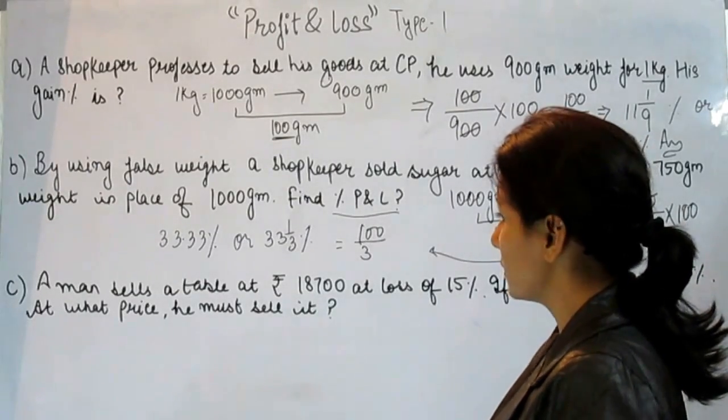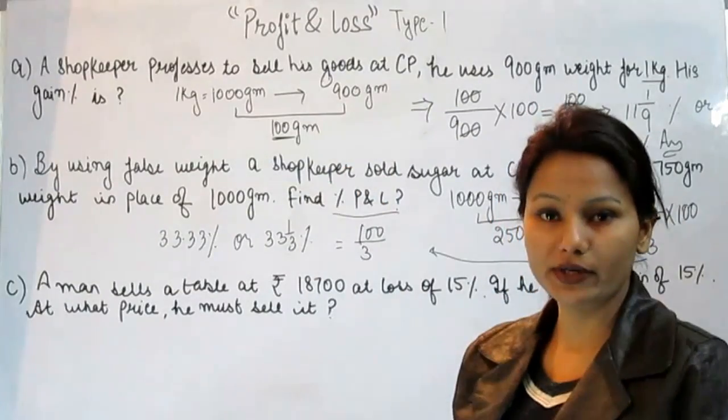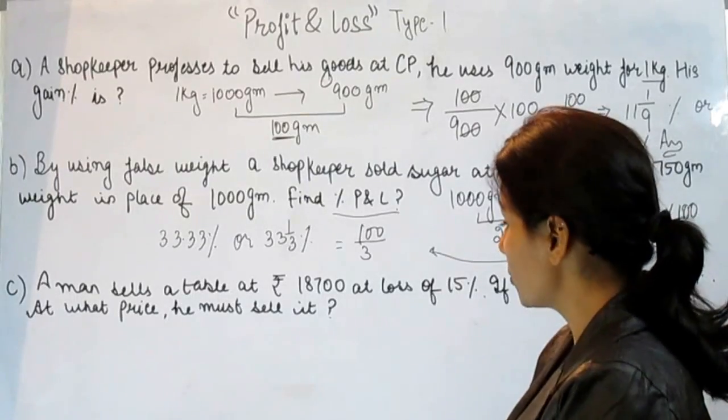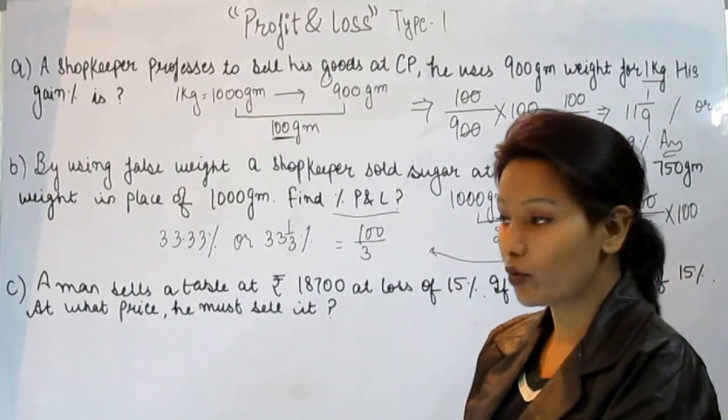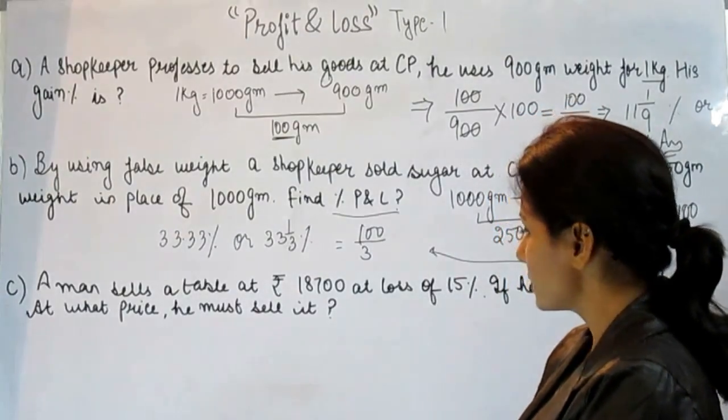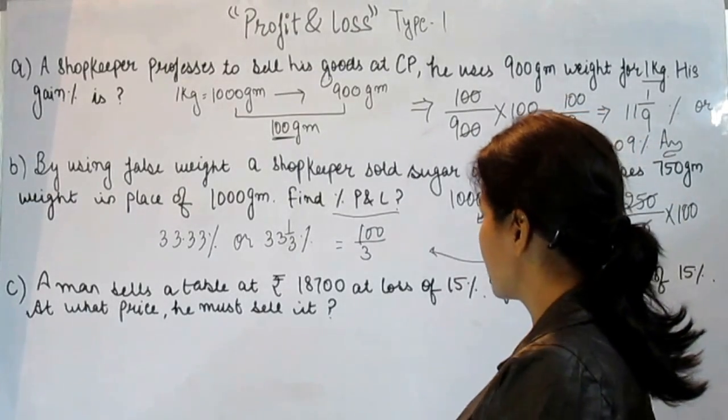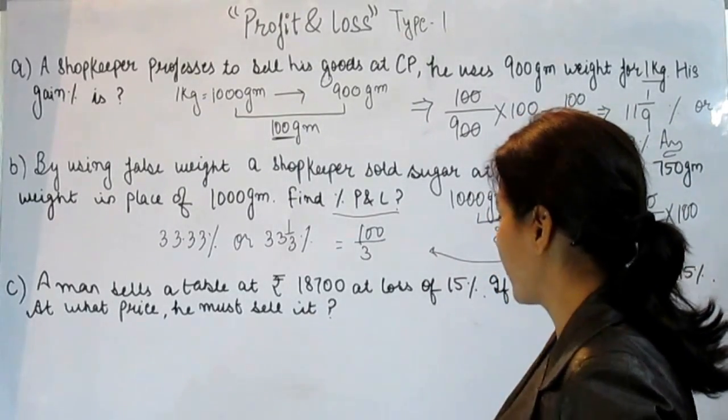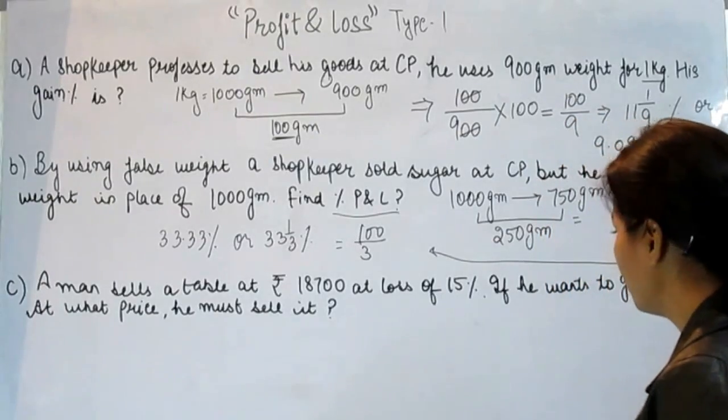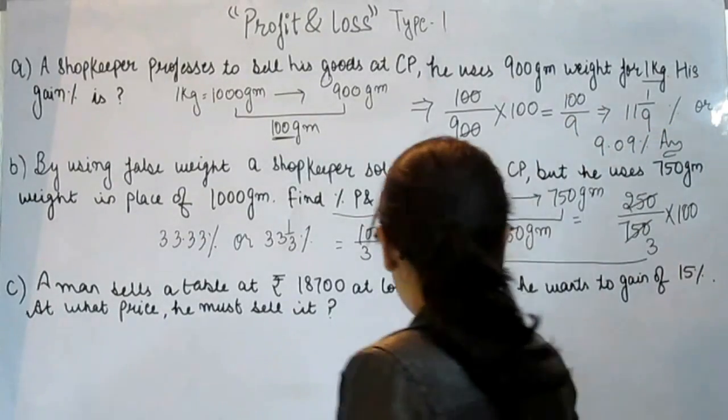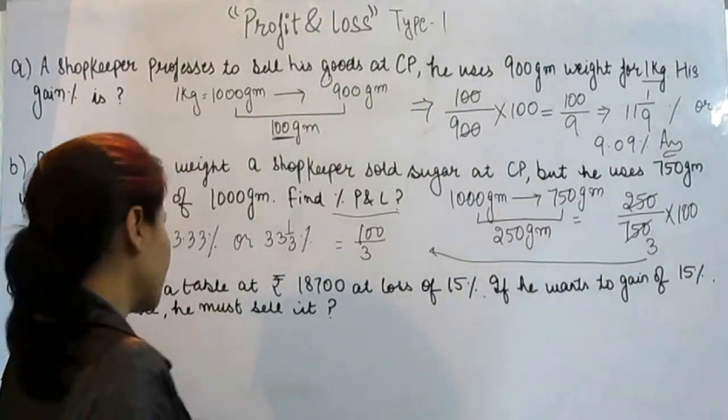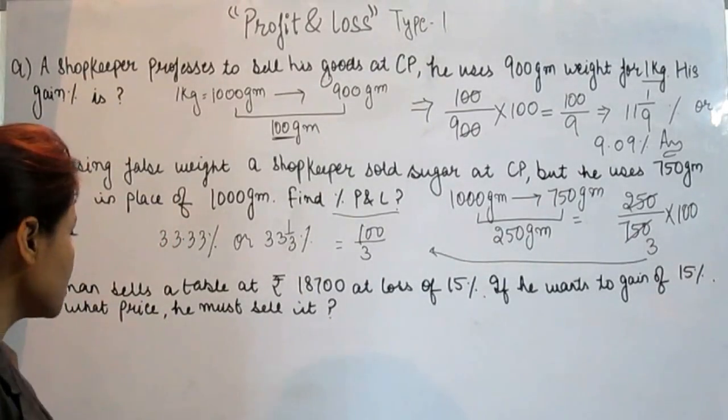Our next problem—these two problems are really important. Third question is also very important: a man sells a table at 18,700 at a loss of 15%. If he wants to gain 15%, at what price must he sell it?